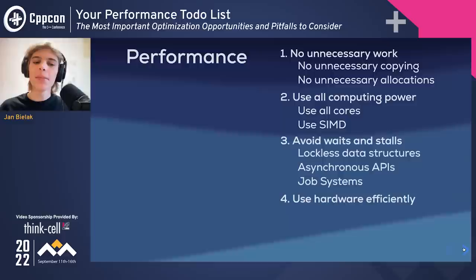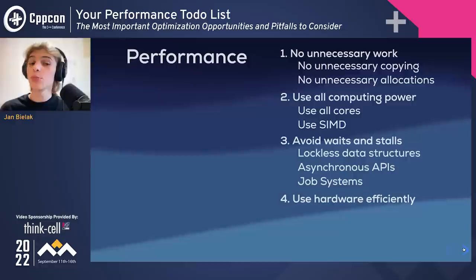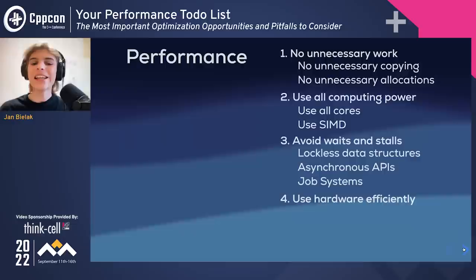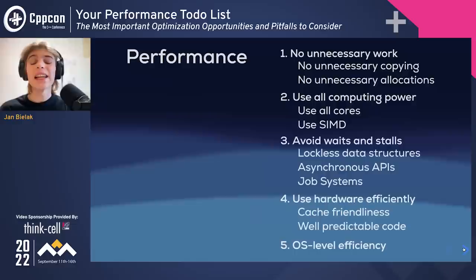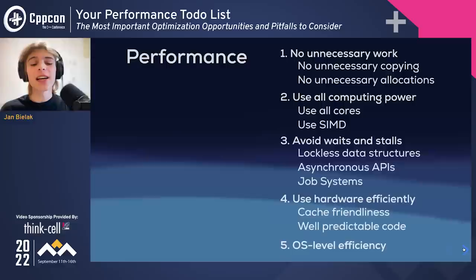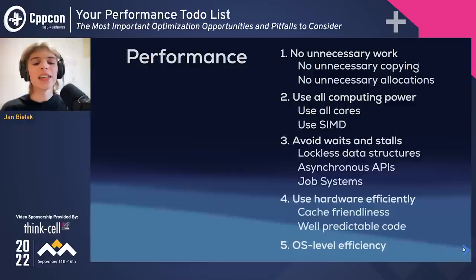The next goal is using hardware efficiently. Many performance improvements from new processor generations come from complex speculative execution heuristics and multi-level caches. By taking advantage of them, program performance can be significantly increased — this mostly means writing cache-friendly and well-predictable code. The last goal is being efficient at the operating system level. Although C++ compiles to machine code, the OS controls the processor. Program execution is often interrupted and threads can be migrated to other cores or suspended. By using OS-specific APIs, we can request that more hardware resources are allocated to our process.